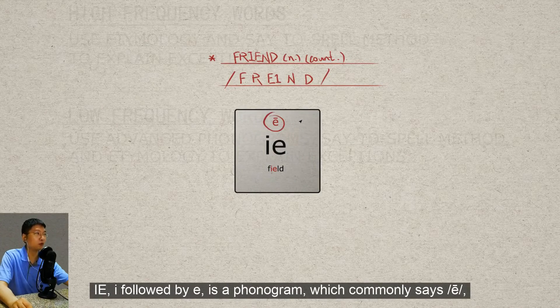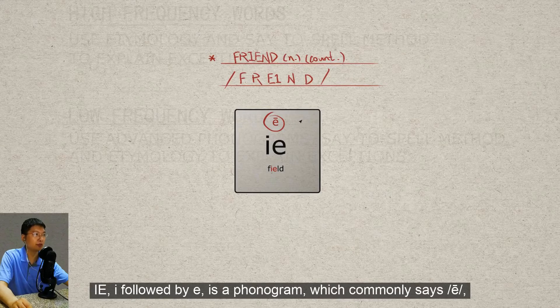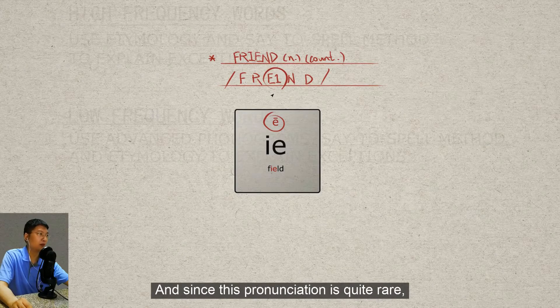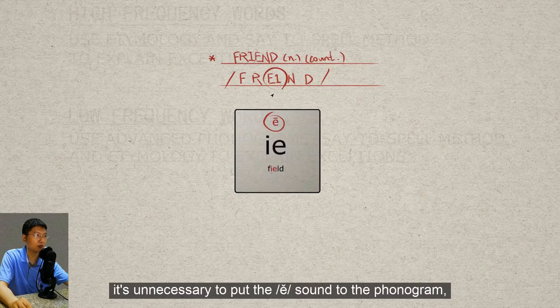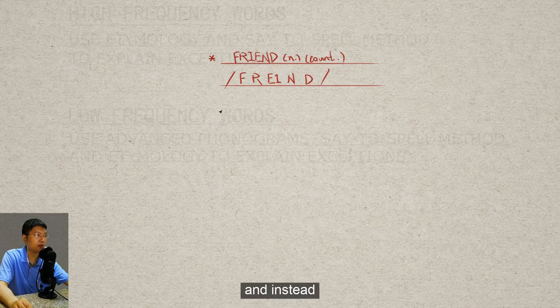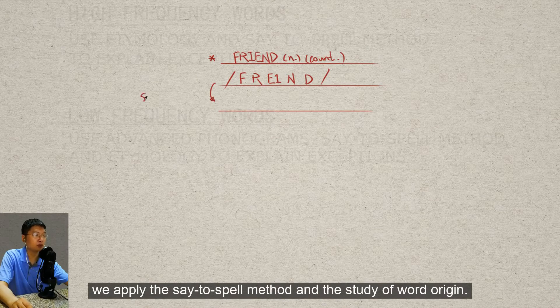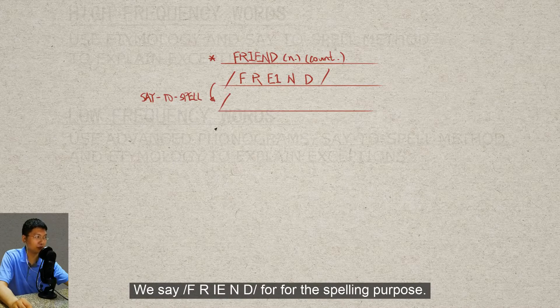E-I followed by E is a phonogram which commonly says 'E', but it says 'E' in the word 'friend'. And since this pronunciation is quite rare, it's unnecessary to put the 'E' sound to the phonogram. Instead, we apply the say-to-spell method and the study of word origin.